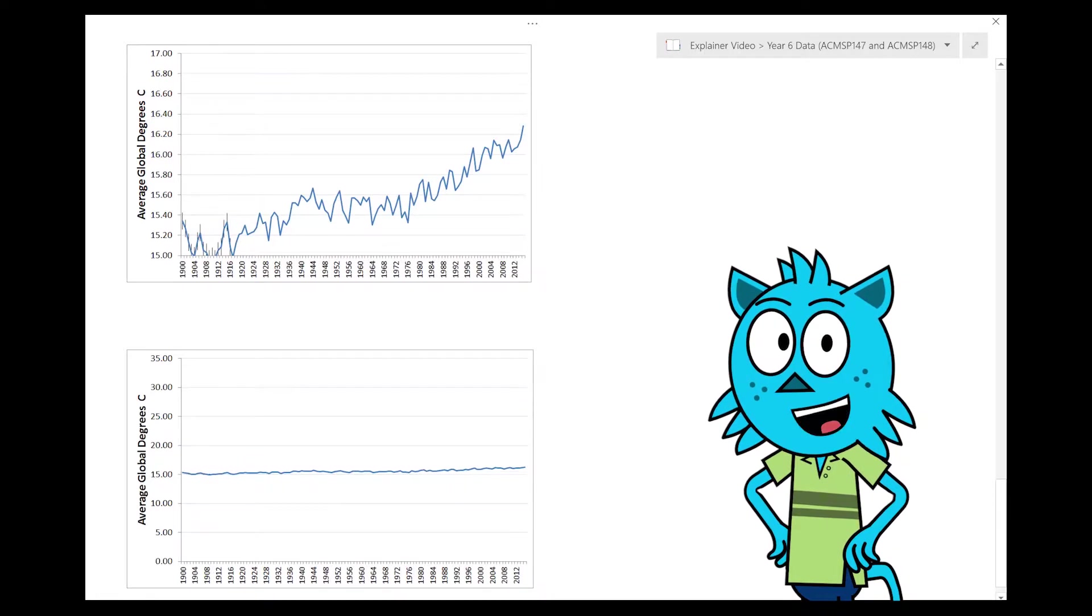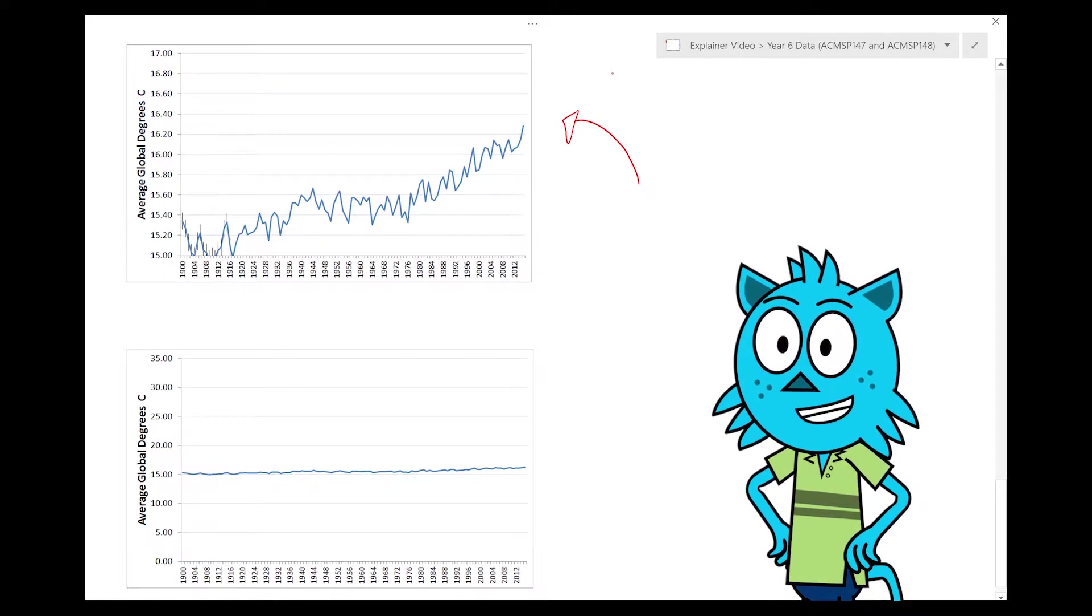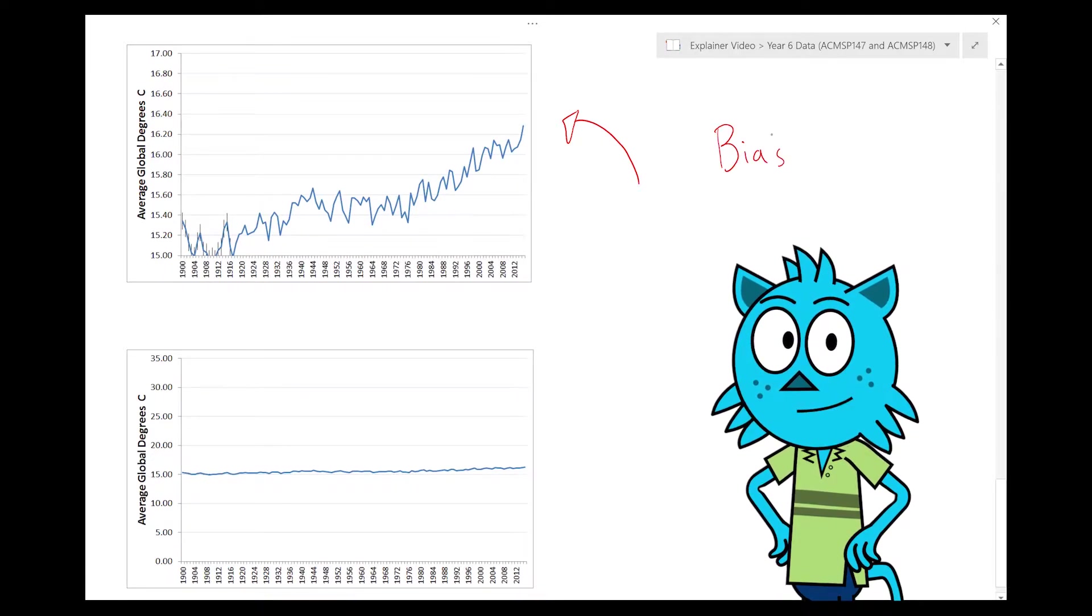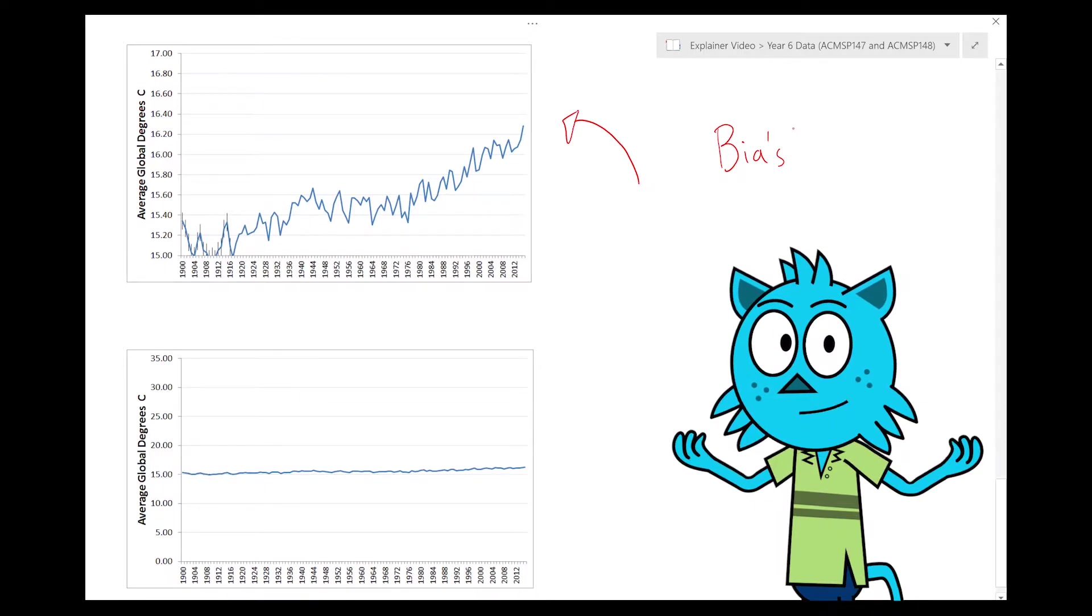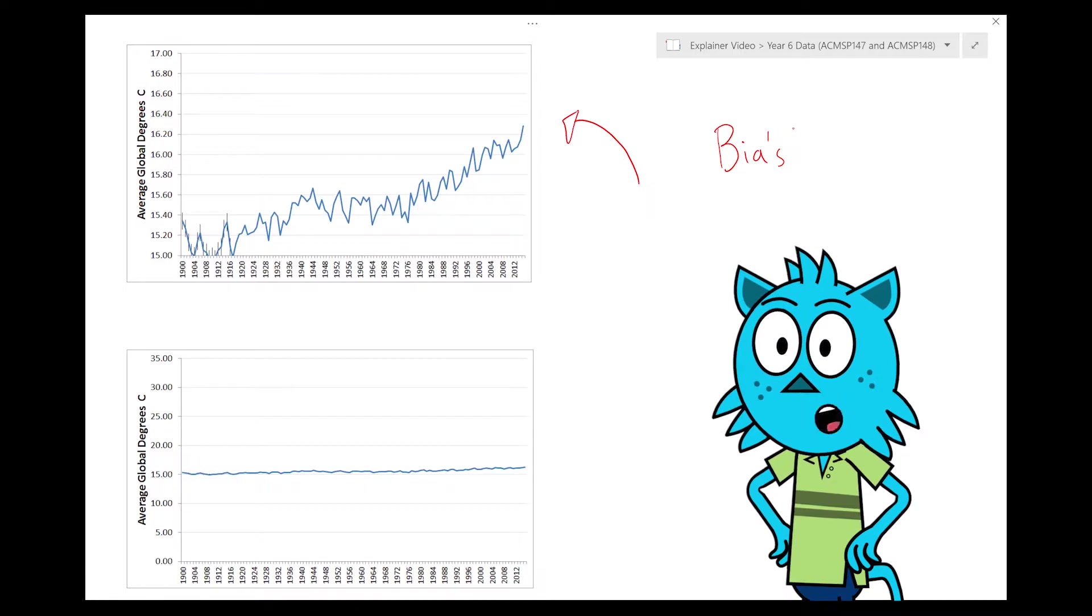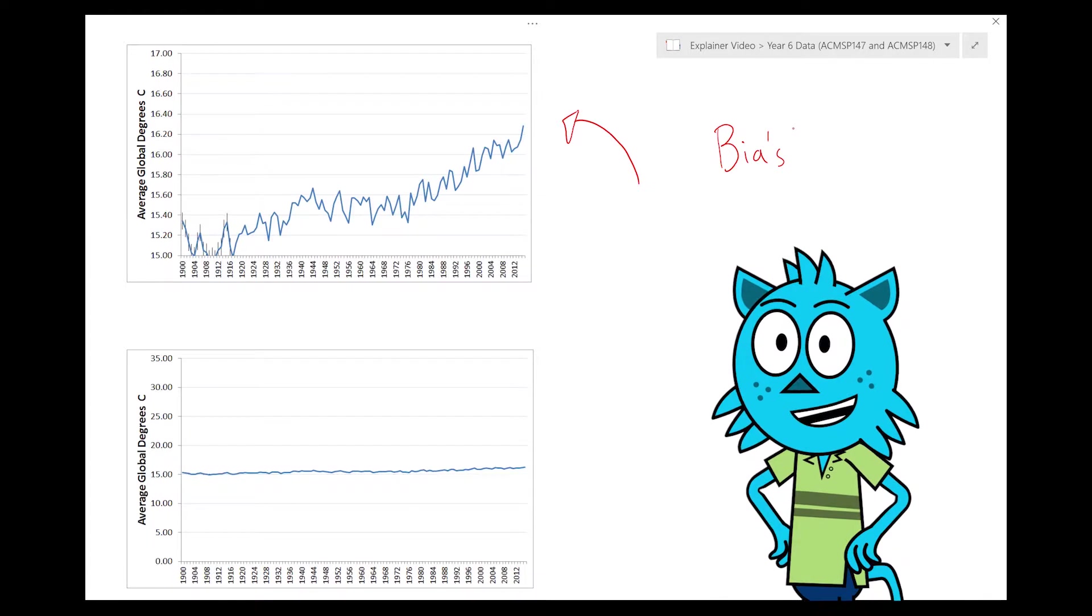Now for our last bit, I'm going to talk to you about what is secondary data and how it's used in media. And the main word I'm using here is a word called bias, which just means we want to show people certain information that will make our point sound more important. So a great example I found from a newspaper talking about average global temperature around the world for the whole year.